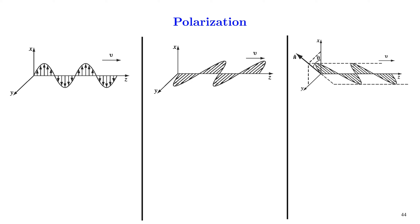So this figure shows the three cases of a transverse wave. In the first figure, the vibrations are along the x direction. And in the second case, the vibration is along the y direction. And in the third case, the vibration is inclined at an angle theta with respect to the x axis. For transverse waves occurring in the x direction, in the first case we will say that the wave is polarized along the x direction. In the second case, we will say that the wave is polarized along the y direction. And in the third case, we shall indicate the direction of polarization as n-hat, that is, it is inclined at an angle theta with respect to the x axis.